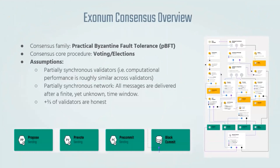Let's go over our blockchain framework of choice, Exonym. We'll be tackling the most relevant and central part: its consensus algorithm. For Exonym, that algorithm is a variant of the practical Byzantine fault tolerance family of algorithms, which are the most common type of Byzantine fault tolerance algorithms. Its core procedure to ensure decentralized consensus is through voting or elections. There are three main assumptions: the validators are partially synchronous, meaning computational power doesn't differ by much; we're operating in a partially synchronous network, meaning all messages are guaranteed to be delivered after a finite yet possibly unknown time window; and strictly more than two-thirds of the validators are honest or non-Byzantine.